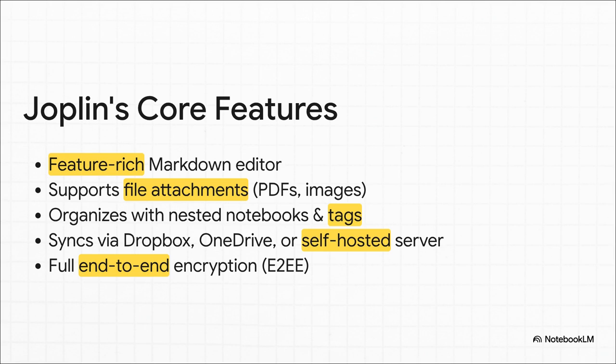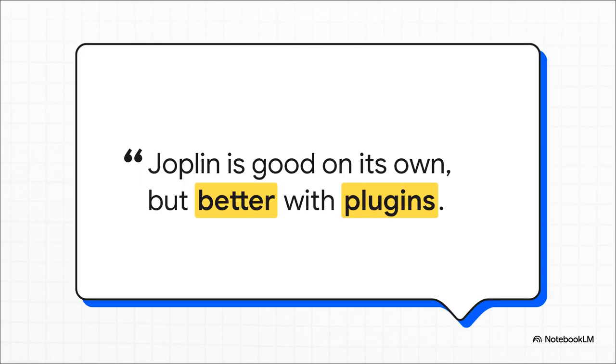Here's where you get the real control: the sync. You can use something you already know, like Dropbox, or — and this is huge for some people — you can sync it to your own server using Nextcloud or WebDAV. And no matter which path you take, everything is always end-to-end encrypted. But here is the real secret to Joplin's power. As XDA Developers points out, the app itself is great, but it's the community-driven plugins that turn it into an absolute productivity beast.